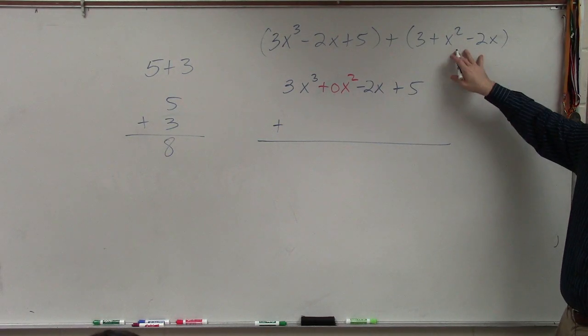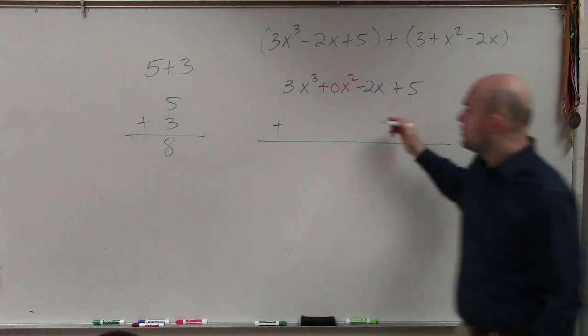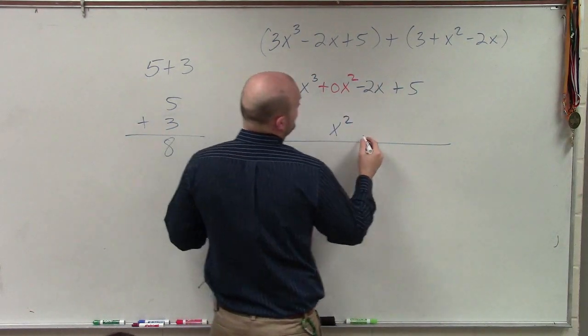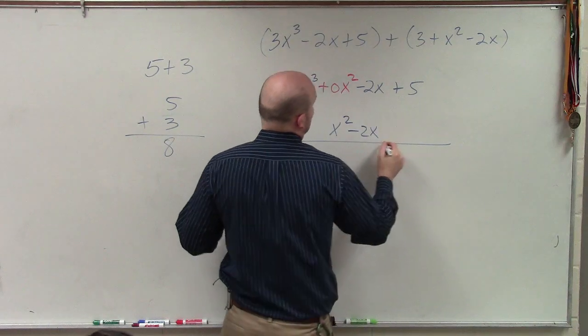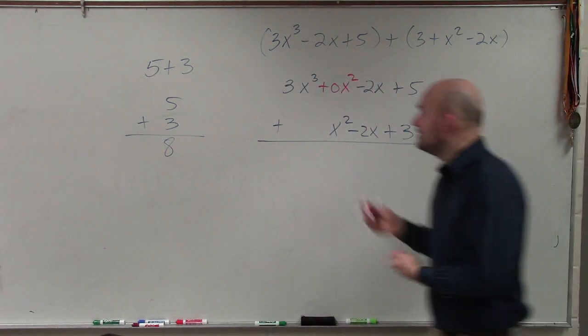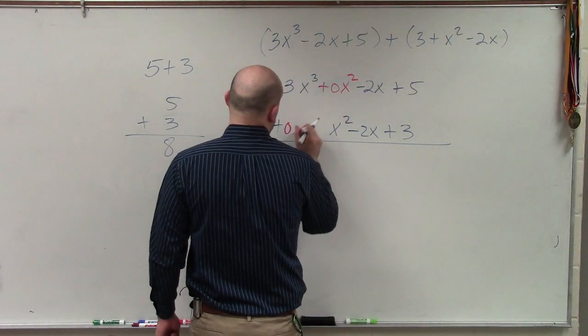Then we write this one. Now, this one's not in descending order. So I don't have an x cubed. So I can write x squared minus 2x plus 3. But if I wanted to have one, 0x cubed.